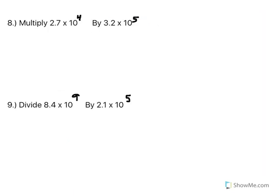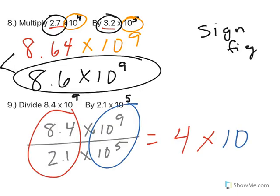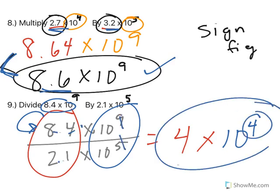I'm going to start by multiplying 2.7 times 10 to the 4th by 3.2 times 10 to the 5th. When I multiply these, I multiply the numbers. 2.7 times 3.2 is 8.64. When we divide, I do recommend whatever comes first goes on top, and I recommend writing it out. That way you can see clearly 8.4 divided by 2.1 gives me 4, 9 minus 5 gives me 4, and there's my final answer.